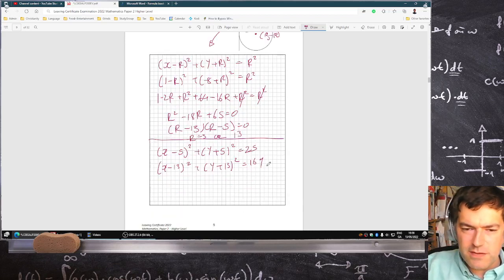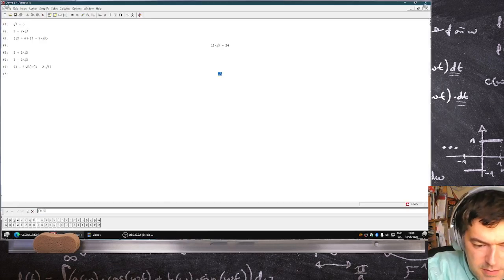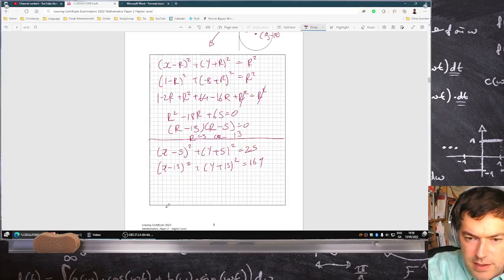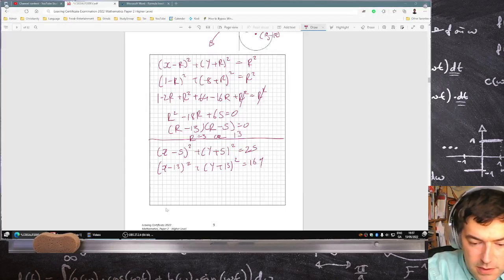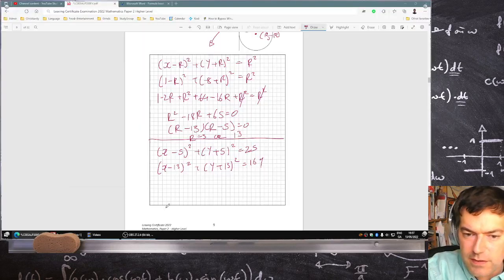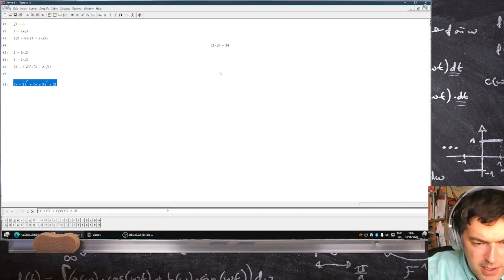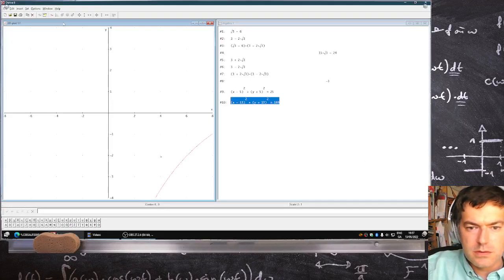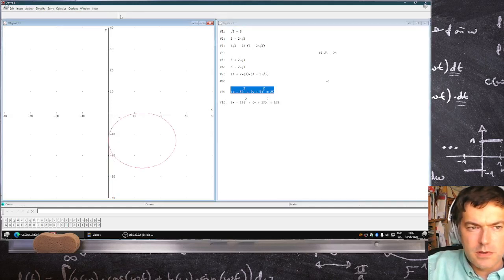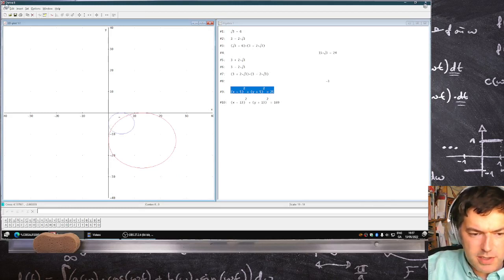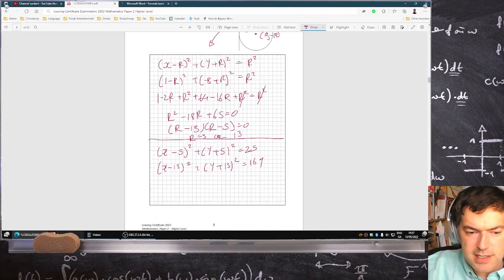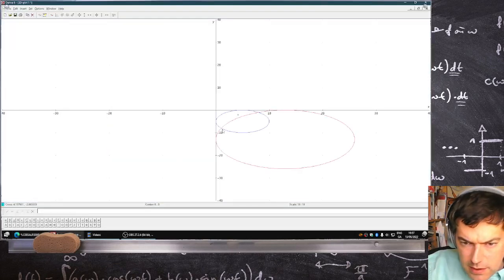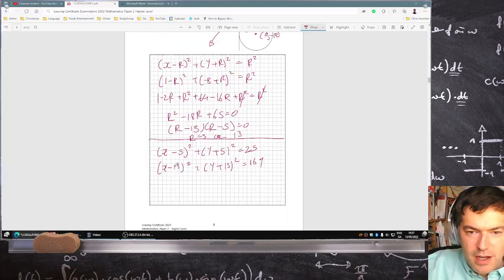I can actually check if these are right, because I have some graphing software. x minus 5 squared plus y plus 5 squared equals 25, and then the same again, but just replaced with 13. So, let's see what it looks like. Zoom out a bit. Yeah, that kind of checks out with the picture, doesn't it? 1 minus 8 should be here. Yeah. I can buy that.